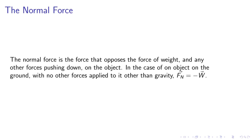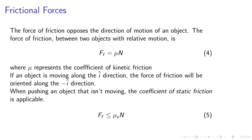Frictional forces. The force of friction opposes the direction of the motion of an object. The force of friction between two objects with relative motion is Ff equals mu N, where N is the normal force and mu is the coefficient of kinetic friction. If an object is moving along the i-hat direction, the force of friction will be oriented along the negative i-hat direction. When pushing an object that isn't moving, the coefficient of static friction is applicable.